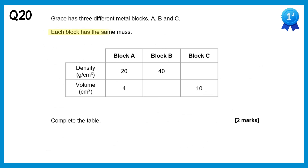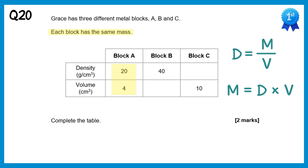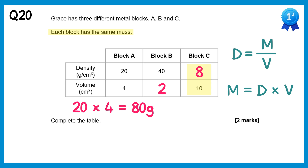This question is about density, mass, and volume, using the formula mass = density × volume. Block A: mass = 20 × 4 = 80g. Since all blocks have the same mass of 80g, for Block B: 40 × volume = 80, so volume = 2. For Block C: density × 10 = 80, so density = 8.